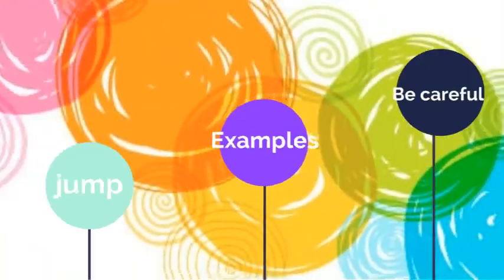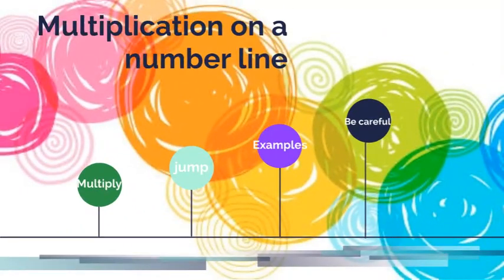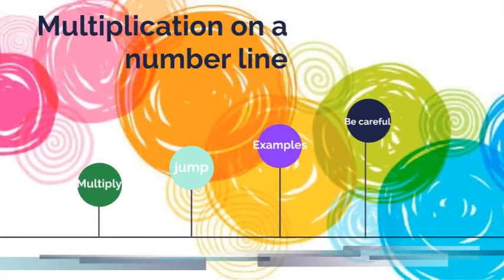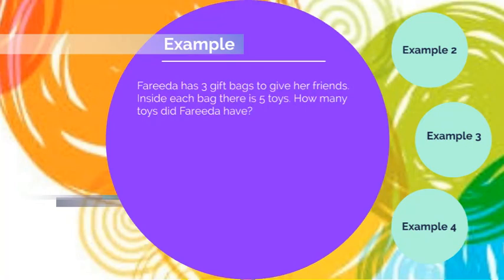Let us start with how do we start with multiplying? What do we multiply first of all? Let's go back to our example, which is going to be Farida is going to have three gift bags, which is three, and inside each bag there is five. So let's try to see what is three times five.